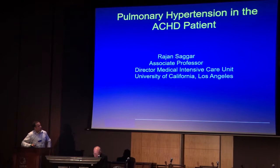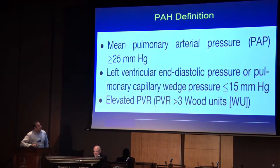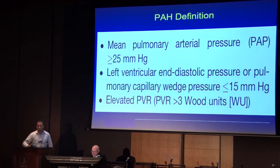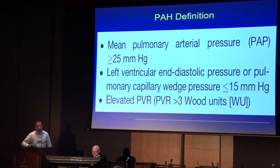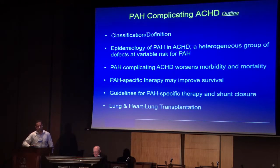I'm going to talk about pulmonary hypertension in 15 minutes — a tough topic in such a short time. The definition is a hemodynamic one: resting mean PA pressure greater than or equal to 25 mmHg — not a systolic pressure but a mean pressure. Left-sided filling pressure must be normal, either by wedge or LV end-diastolic pressure, and pulmonary vascular resistance must be elevated.